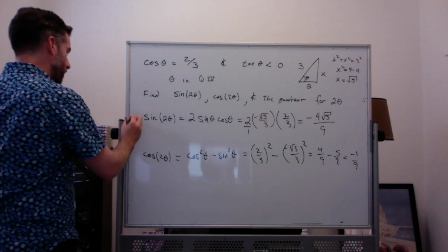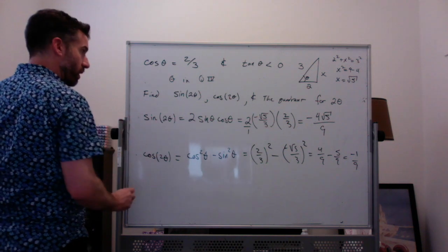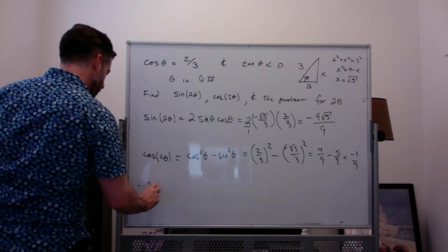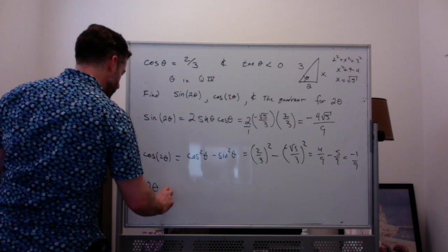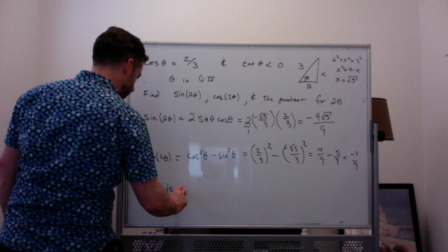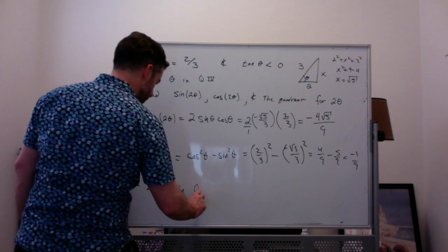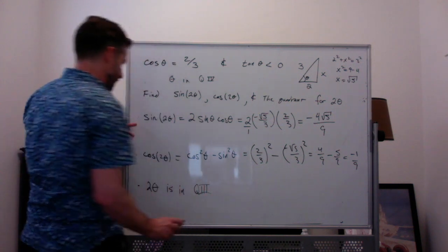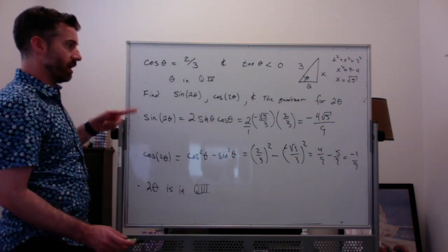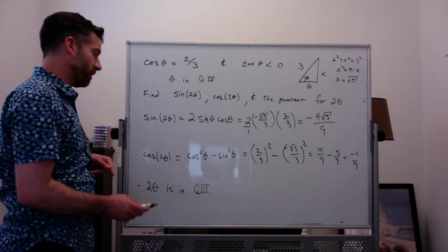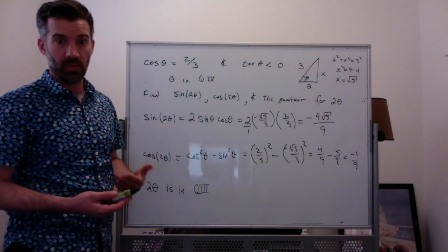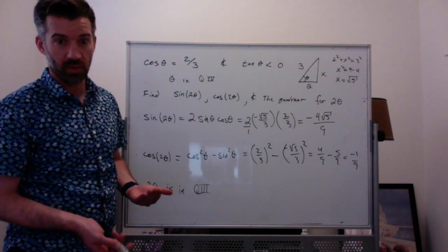To answer the third question: what quadrant is 2 theta in? 2 theta must be in quadrant 3 because both sine of 2 theta and cosine of 2 theta are negative, and when sine and cosine are both negative, we're in quadrant 3.